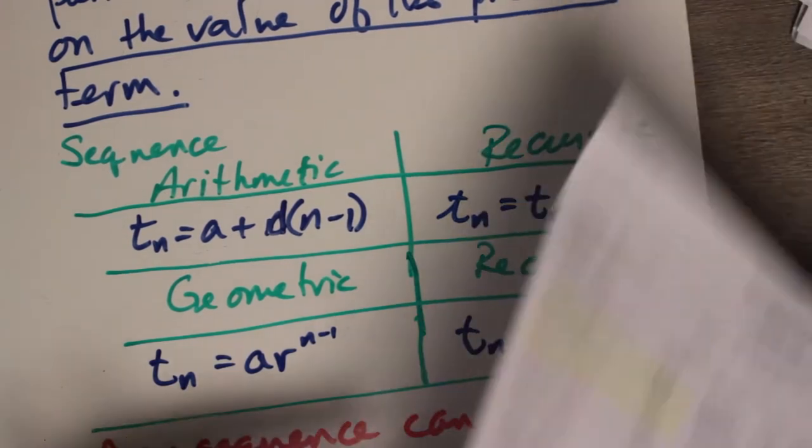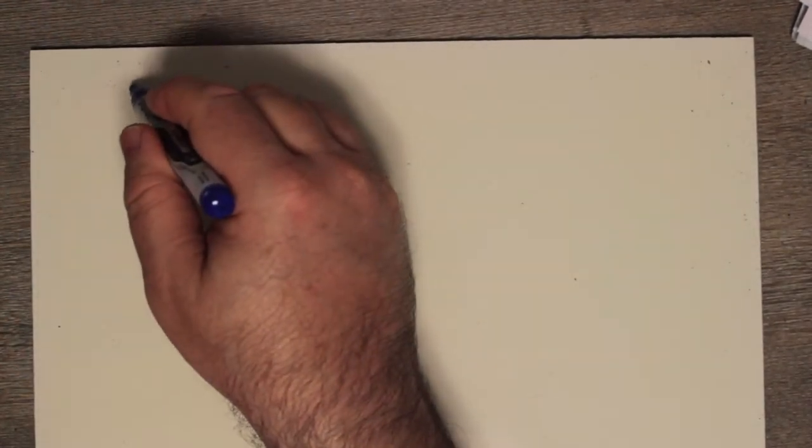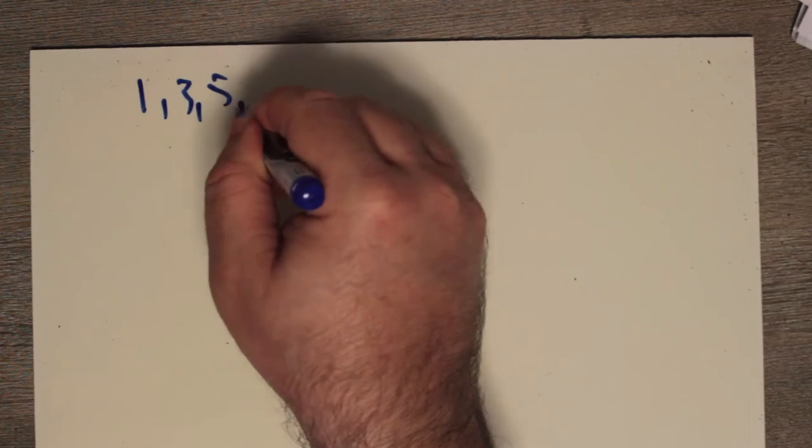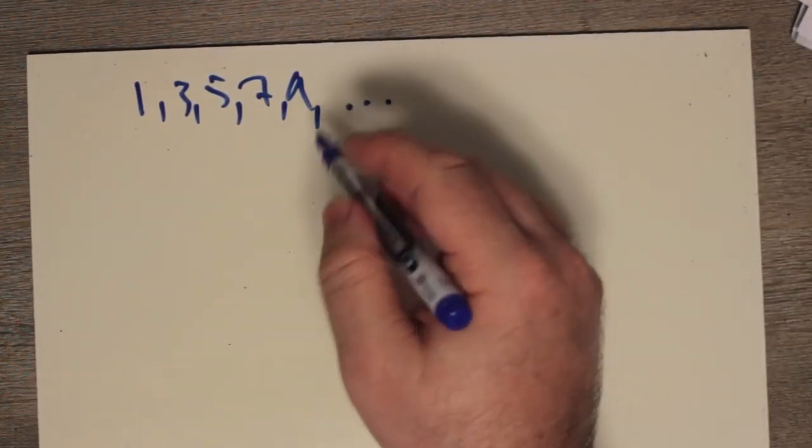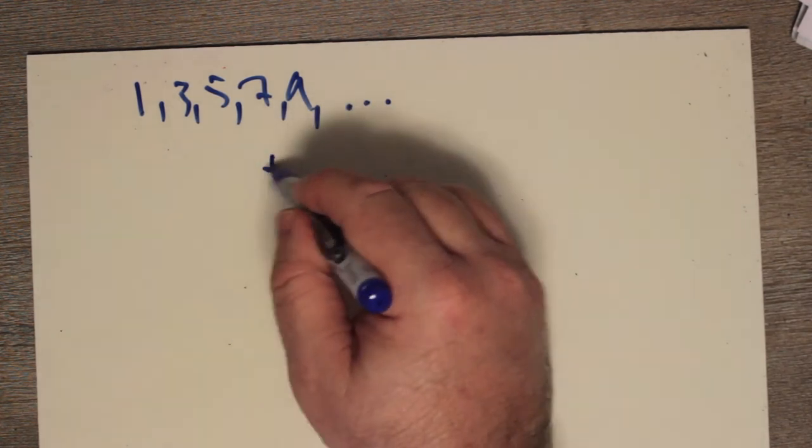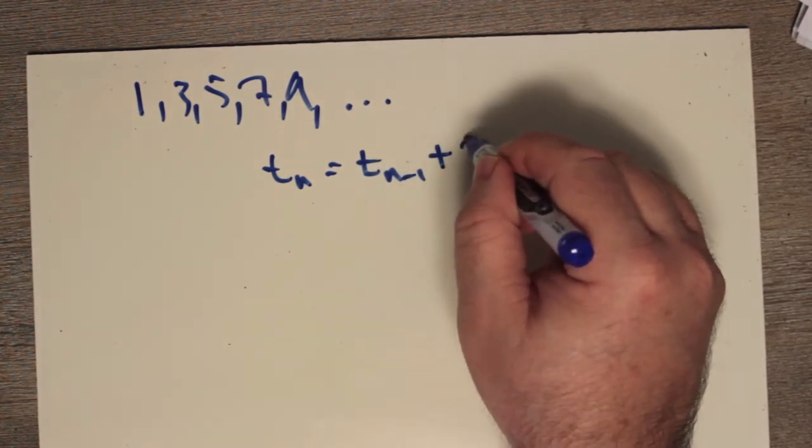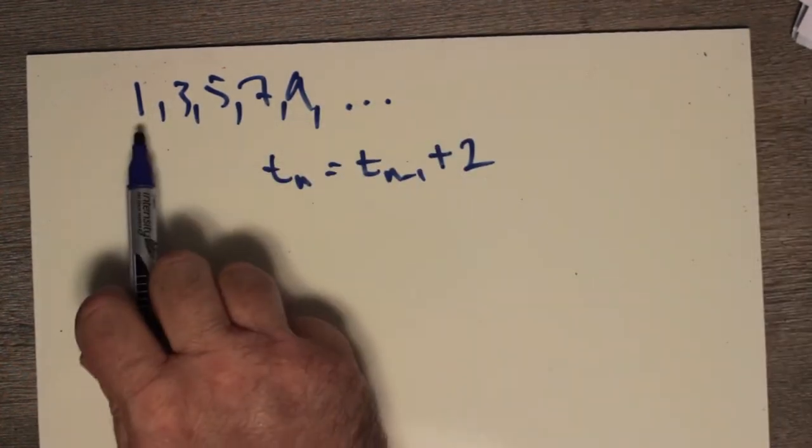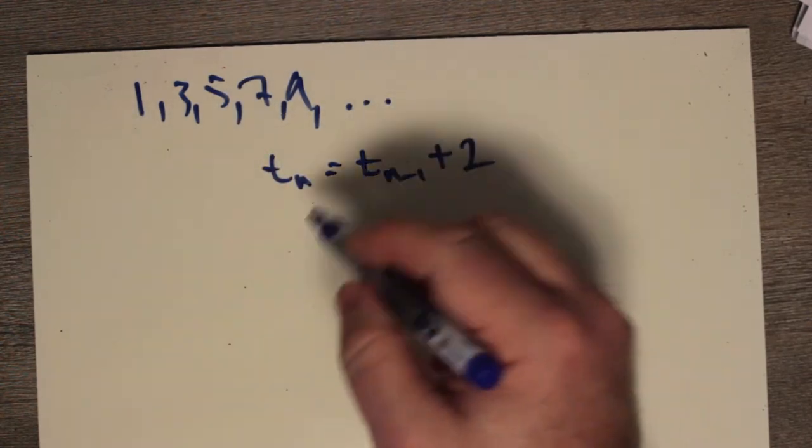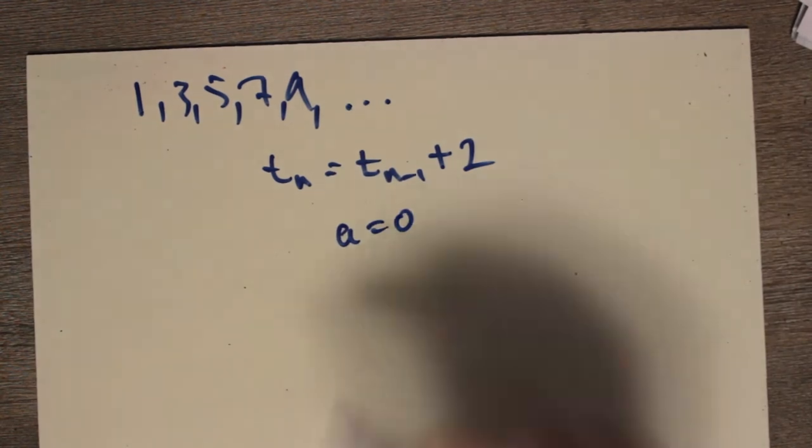But in order to distinguish this from any other sort of sequence, you have to know what the first term is. Otherwise, you can make this into anything you like. For example, let's just take this board and I'll make the numbers 1, 3, 5, 7, 9, really just the odd numbers.